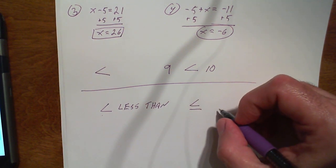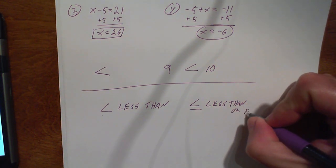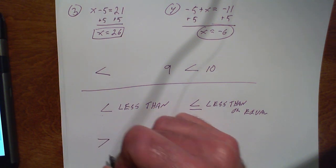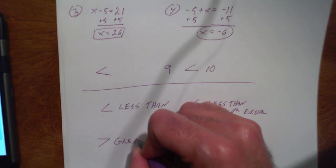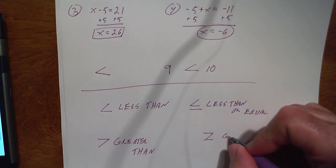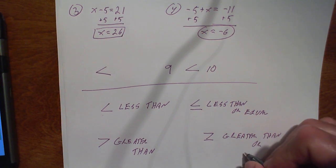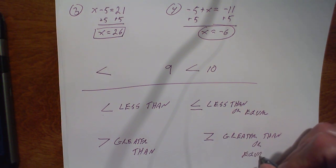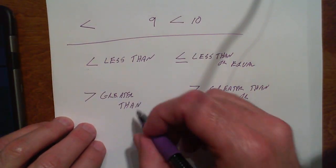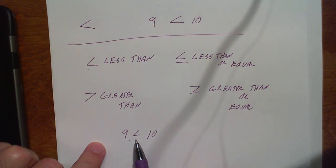If it's facing the other way, we call it greater than. And with a line under that, it's greater than or equal to. So for example, if we have 9 and 10, we would read this as 9 is less than 10.